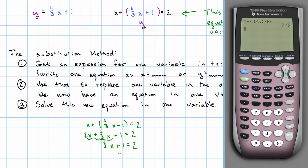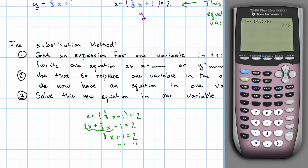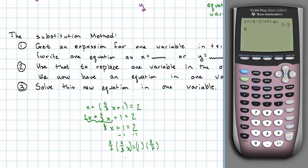Subtract one from both sides to get seven-thirds x equals one. We can think of the next step as multiplying by three-sevenths or dividing by seven-thirds, and we get x equals three-sevenths, which we knew was going to be the solution.